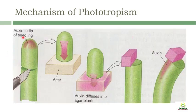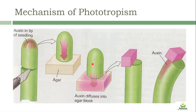In F.W. Went's experiment, auxin is synthesized at the tip of the seedling. When the coleoptile is growing in normal conditions towards light, auxin is synthesized at the tip of the oat coleoptile. He removed the tip and placed it on an agar block. The auxin synthesized in the tip diffuses into the agar block. He then placed this agar block on one side of the coleoptile. Auxin from the agar block diffuses into the oat coleoptile on one side, causing a bending response. This experiment explains the mechanism of phototropism.